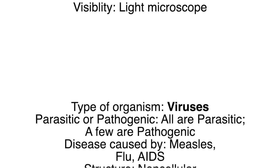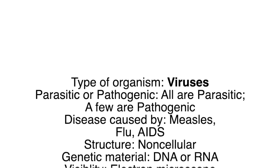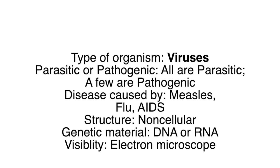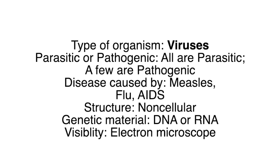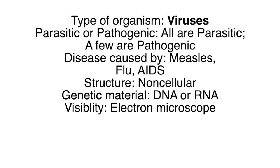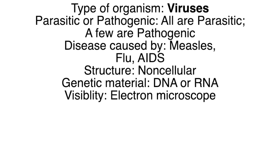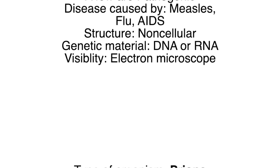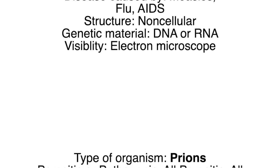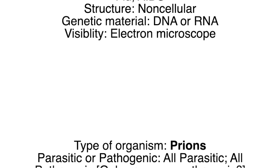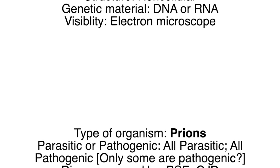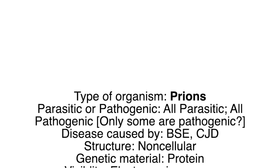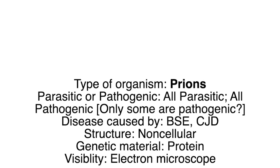Type of organism: viruses — all are parasitic, a few are pathogenic. Diseases caused include measles, flu and AIDS. Viruses have a non-cellular structure with genetic material of either DNA or RNA, and are visible only by electron microscope.